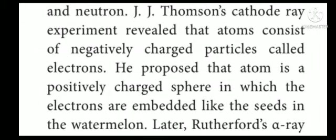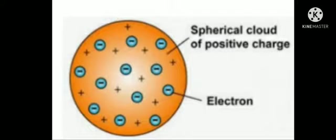JJ Thomson's cathode ray experiment revealed that atoms consist of a negatively charged particle called electron. He proposed that the atom is a positively charged sphere in which the electrons are embedded like the seeds in a watermelon, as shown in the picture.